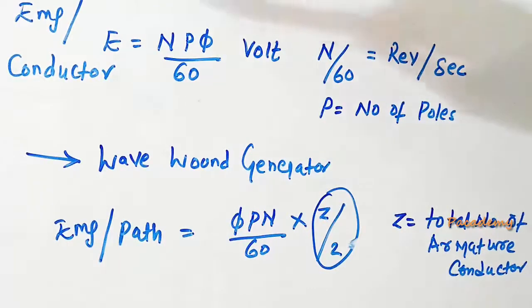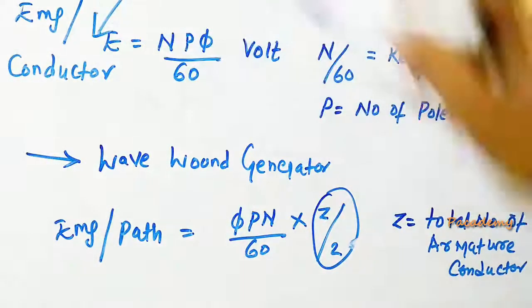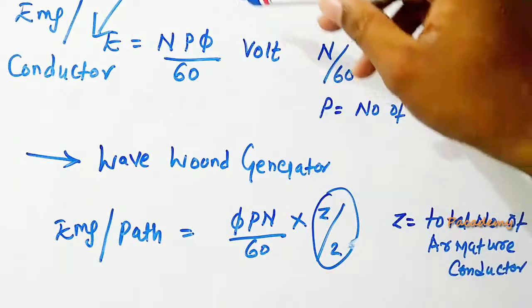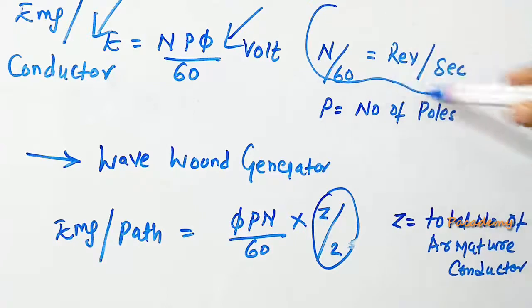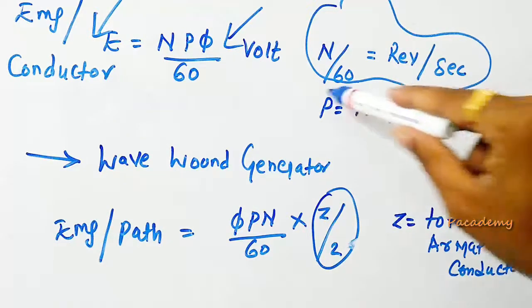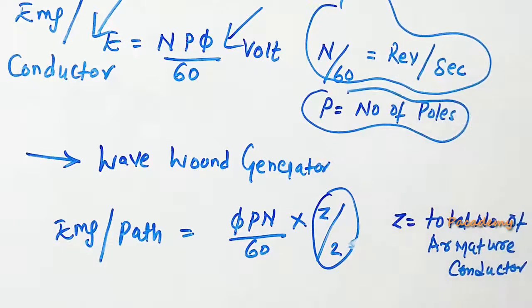The equation for EMF generated in any generator, as EMF per conductor, is given by the equation E equals NP𝜙 divided by 60, where N divided by 60 is the number of revolutions that the generator makes per second, and P is the number of poles of the generator.